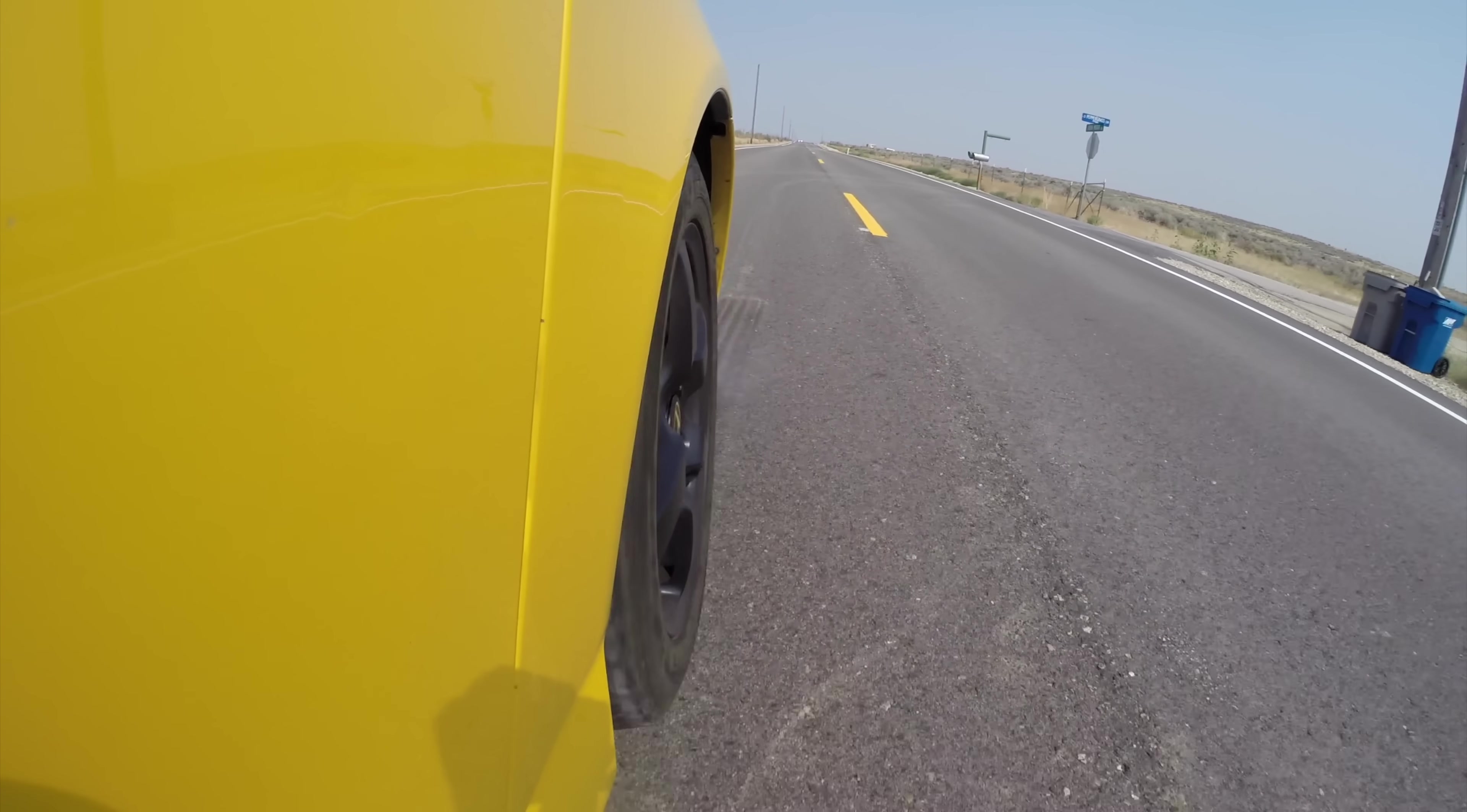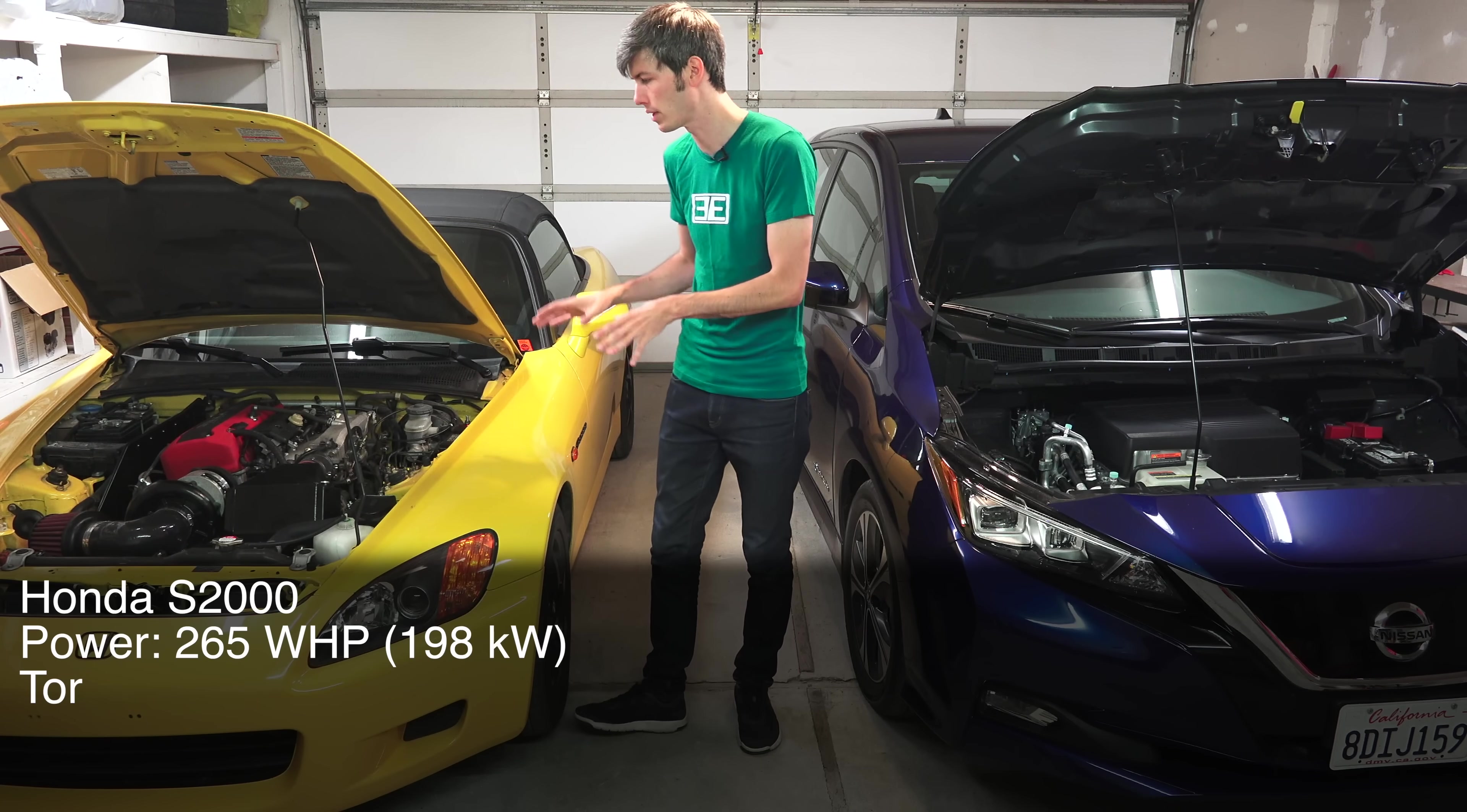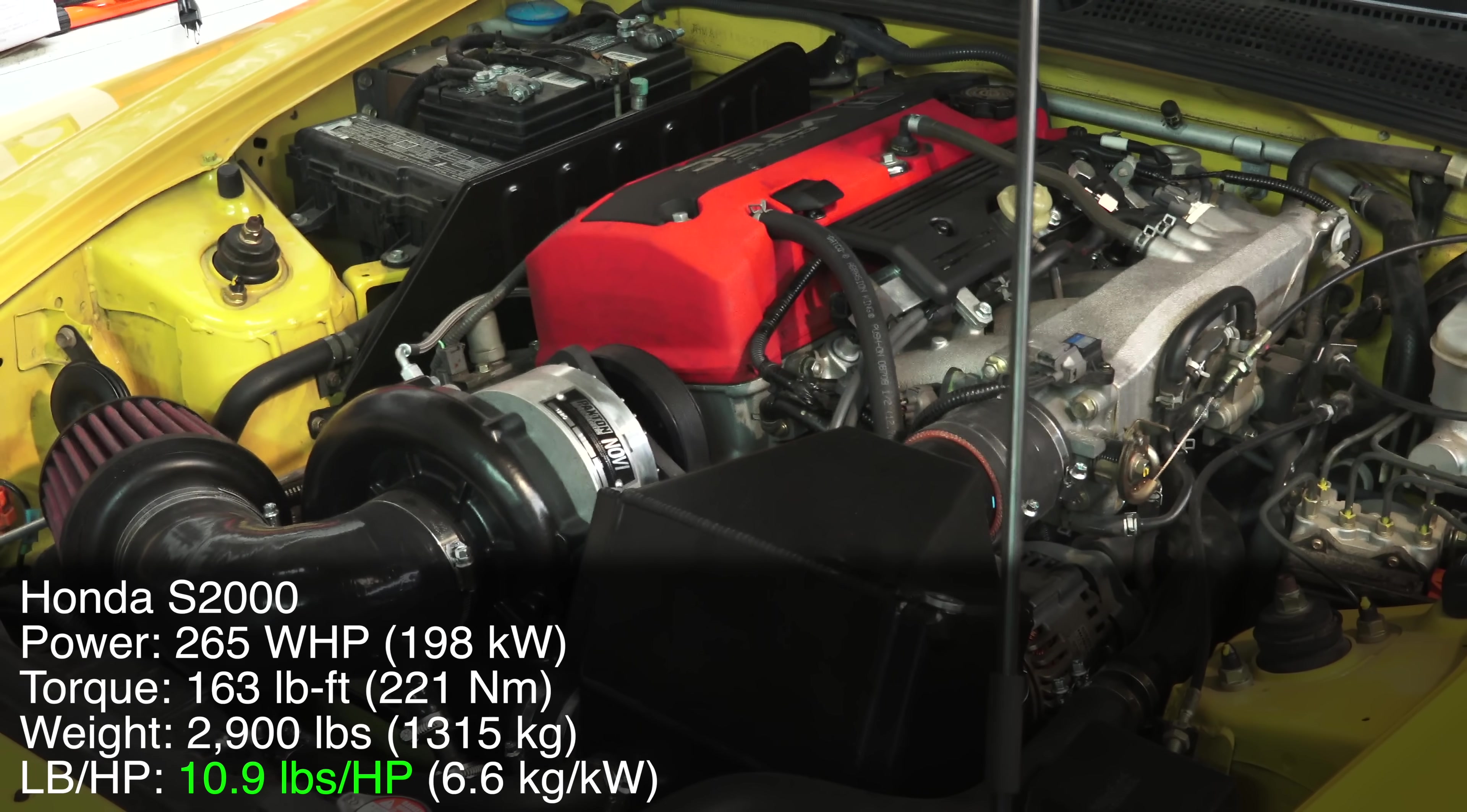Now the S2000 is producing about 265 horsepower at the wheels and 163 pound-feet of torque at the wheels, and this car weighs about 2900 pounds, so it's got about 11 pounds for every horsepower at the wheel.